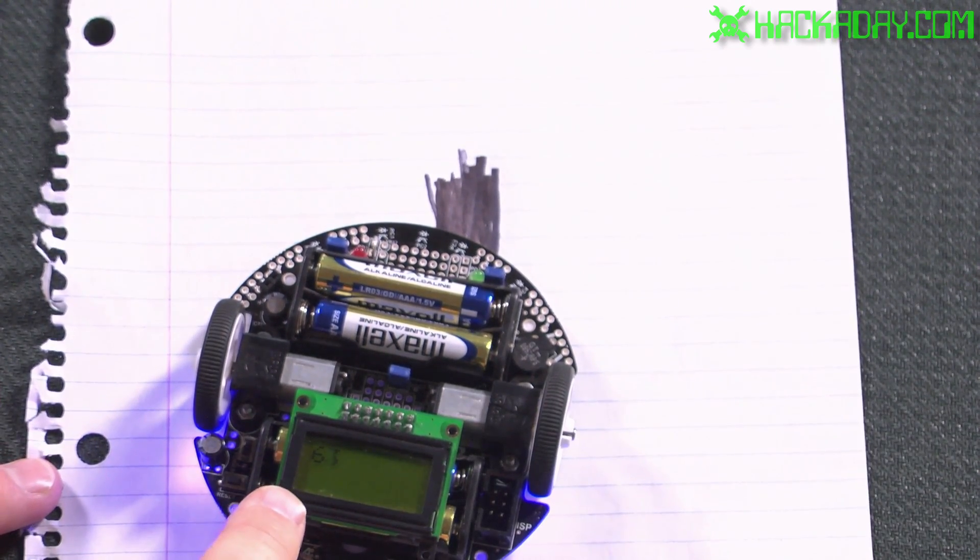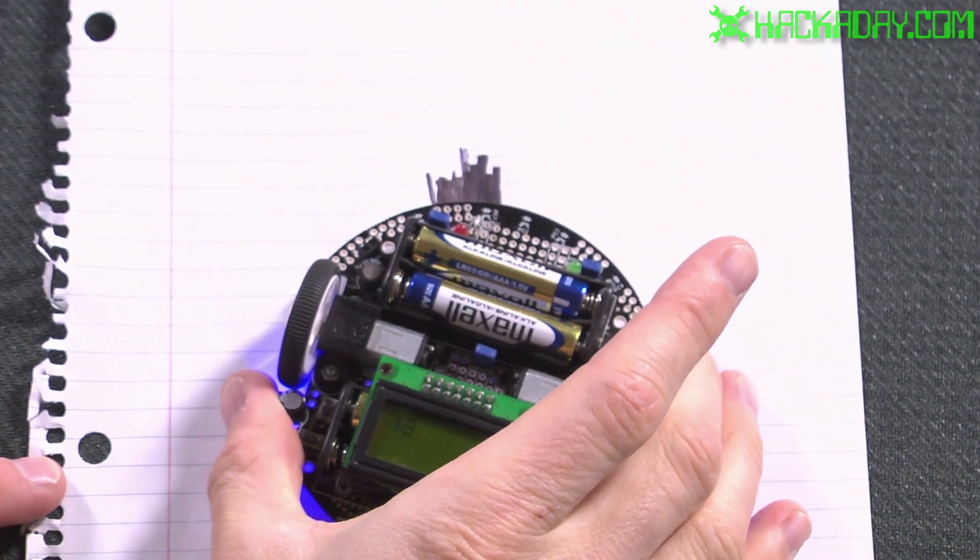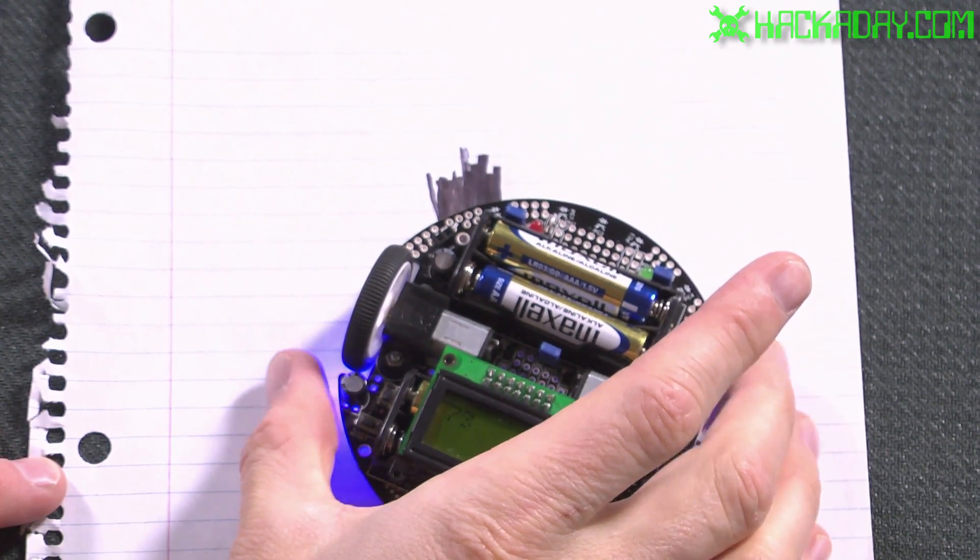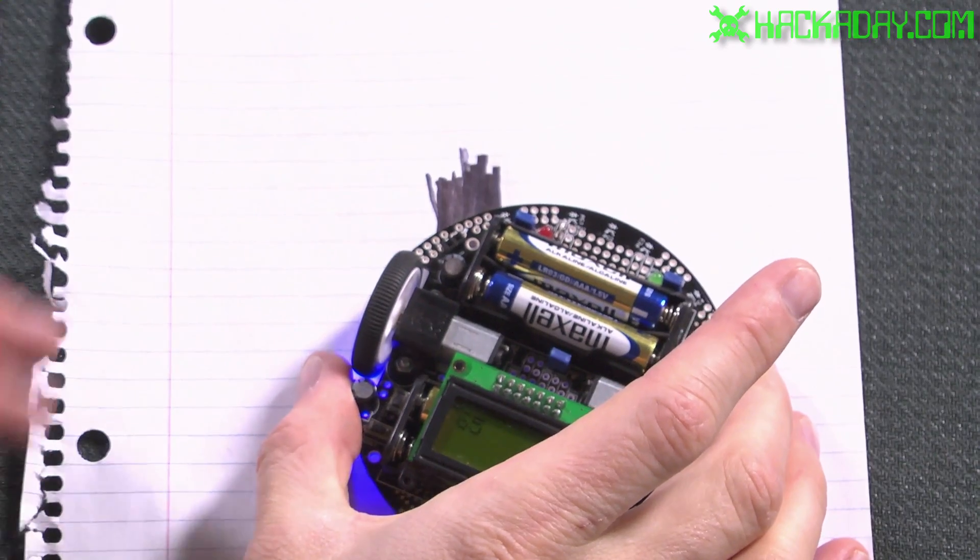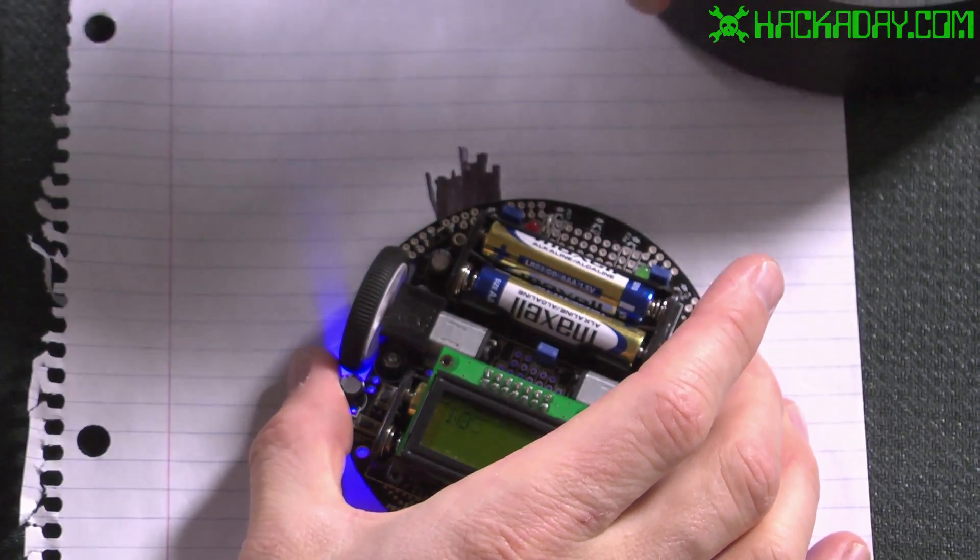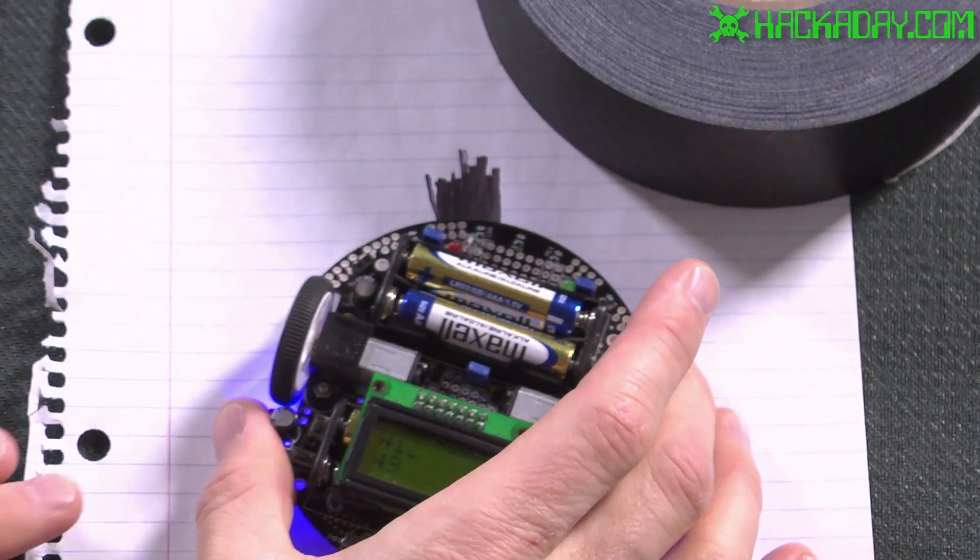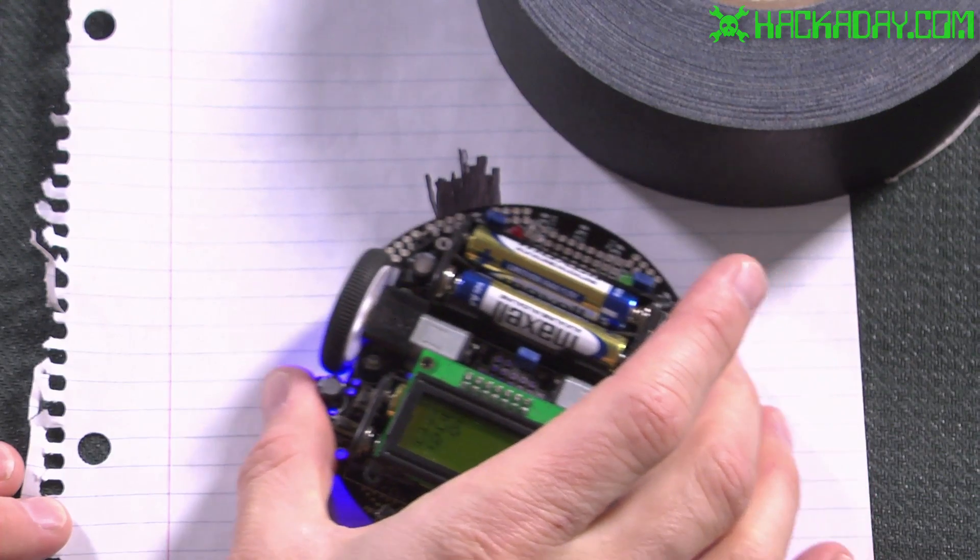Now, hopefully you can read this. It's saying 64 at the moment. As I pass over the line, it looks like our lights are kind of interfering a little bit with it here. Let me try this one more time, and I'll hopefully shadow the sensor.